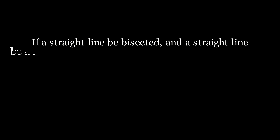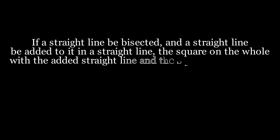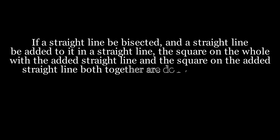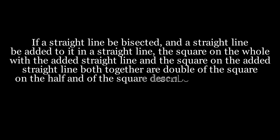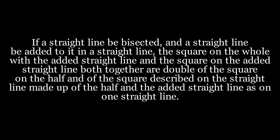If a straight line be bisected and a straight line be added to it in a straight line, the square on the whole with the added straight line and the square on the added straight line both together are double of the square on the half and of the square described on the straight line made up of the half and the added straight line as on one straight line.